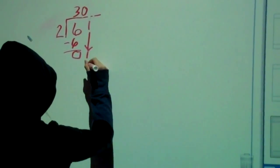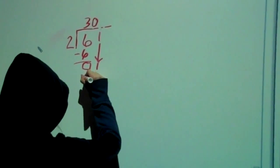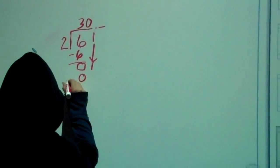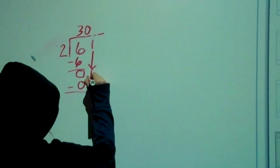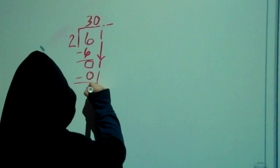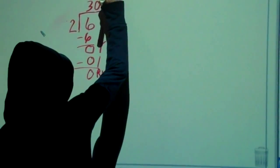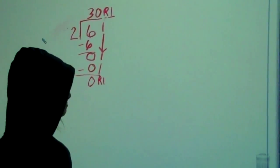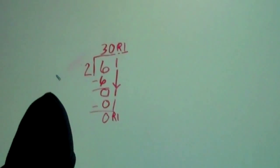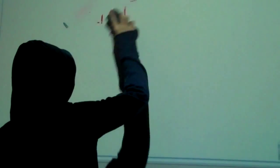And then 2 times 0 is 0, and then we have a remainder of 1. That was our first problem. Now we're going to go on to a little bit of a harder problem.